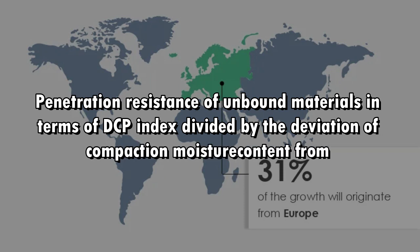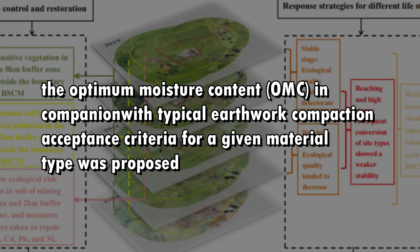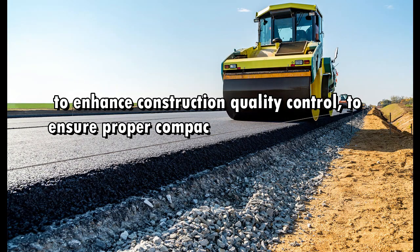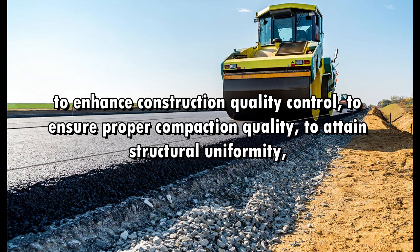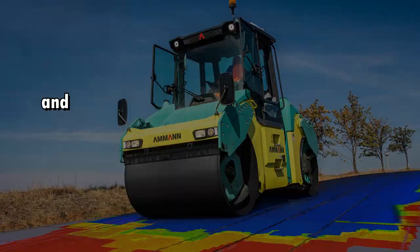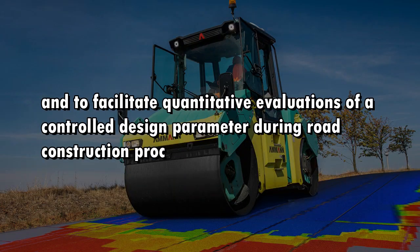Penetration resistance of unbound materials in terms of DCP index divided by the deviation of compaction moisture content from the Optimum Moisture Content (OMC), in companion with typical earthwork compaction acceptance criteria for a given material type, was proposed to enhance construction quality control, to ensure proper compaction quality, to attain structural uniformity, and to facilitate quantitative evaluations of a controlled design parameter during road construction.